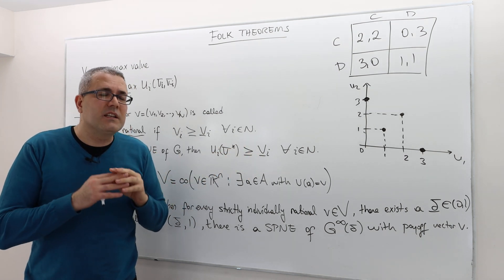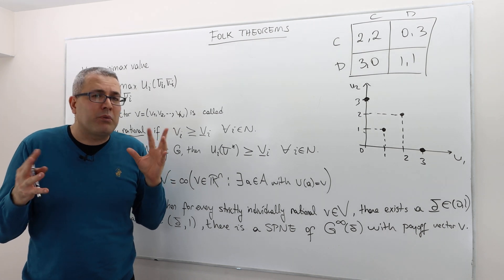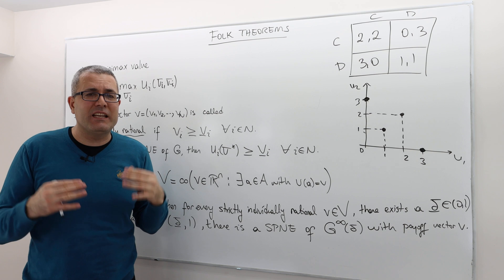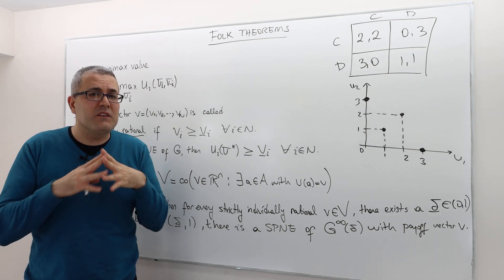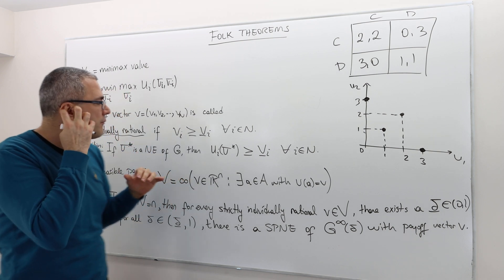So that means there exists no Nash equilibrium of any game where a player gets or receives less than his or her min-max value. This is impossible. All right. So these are the Nash equilibrium strategies.